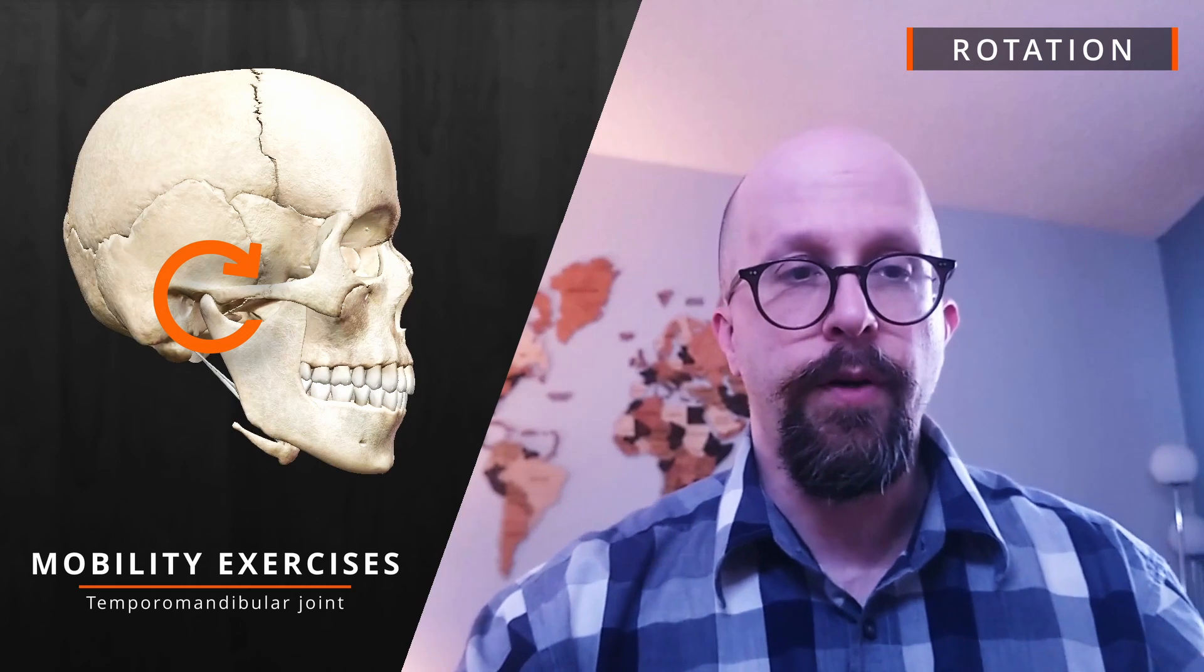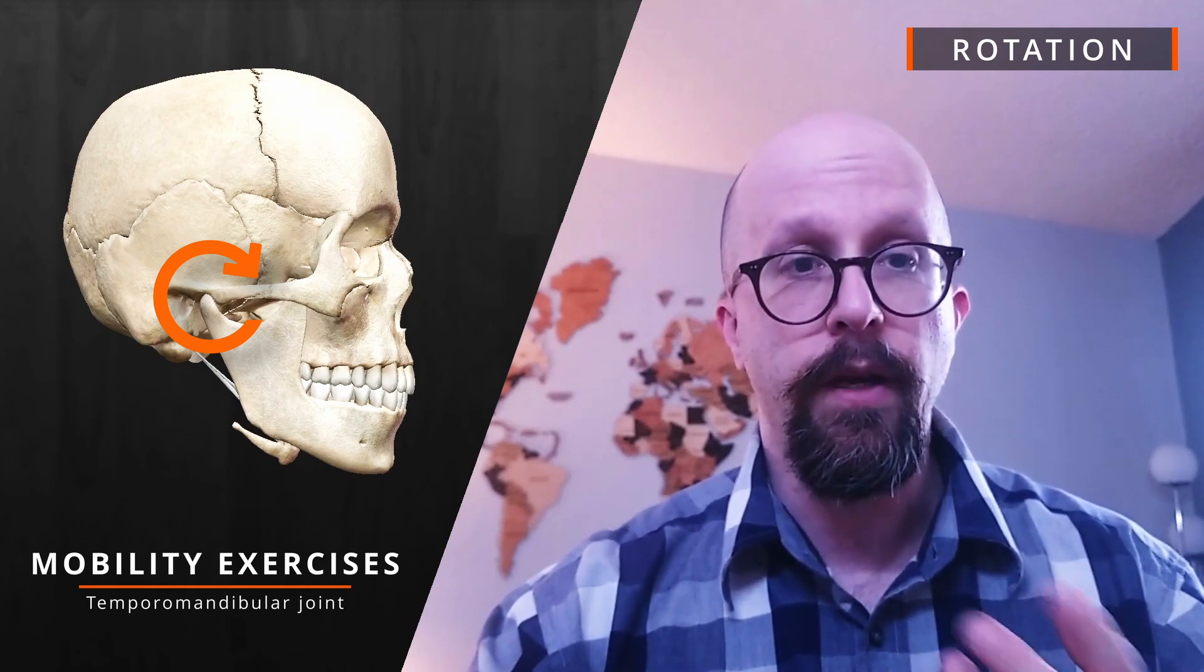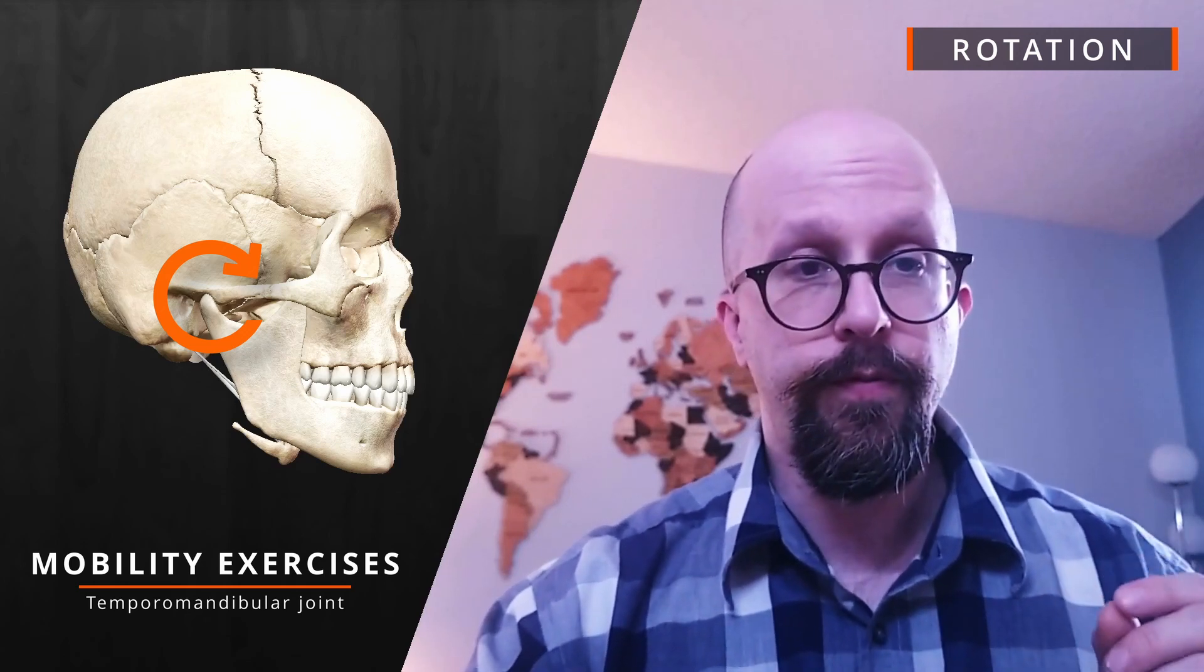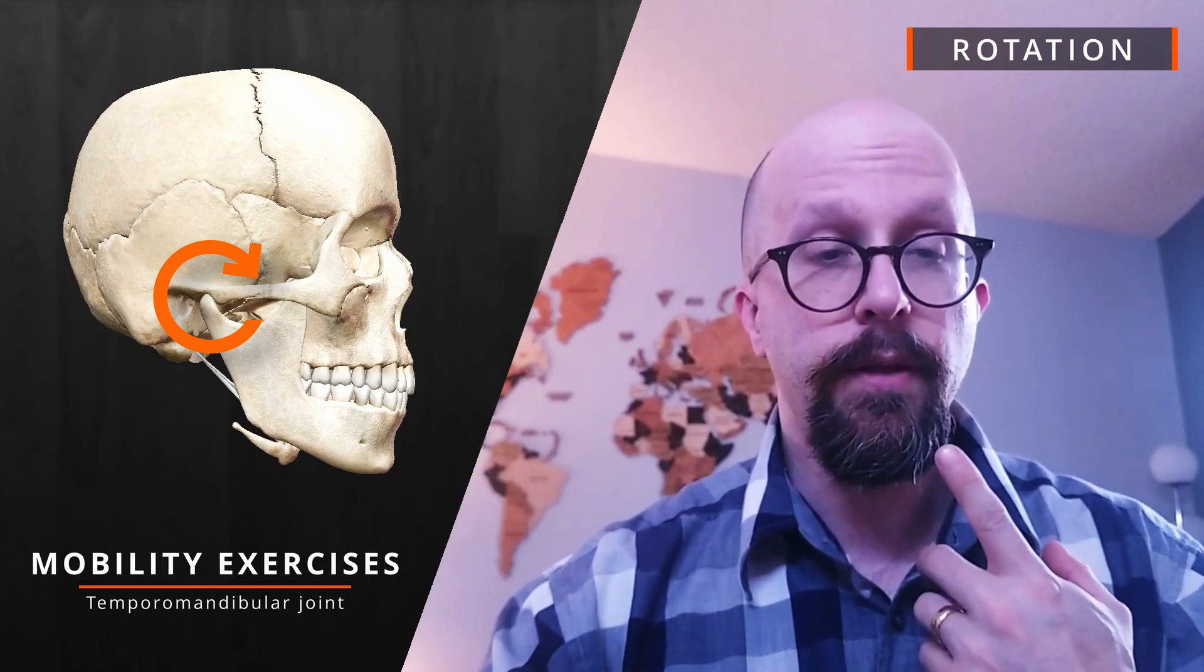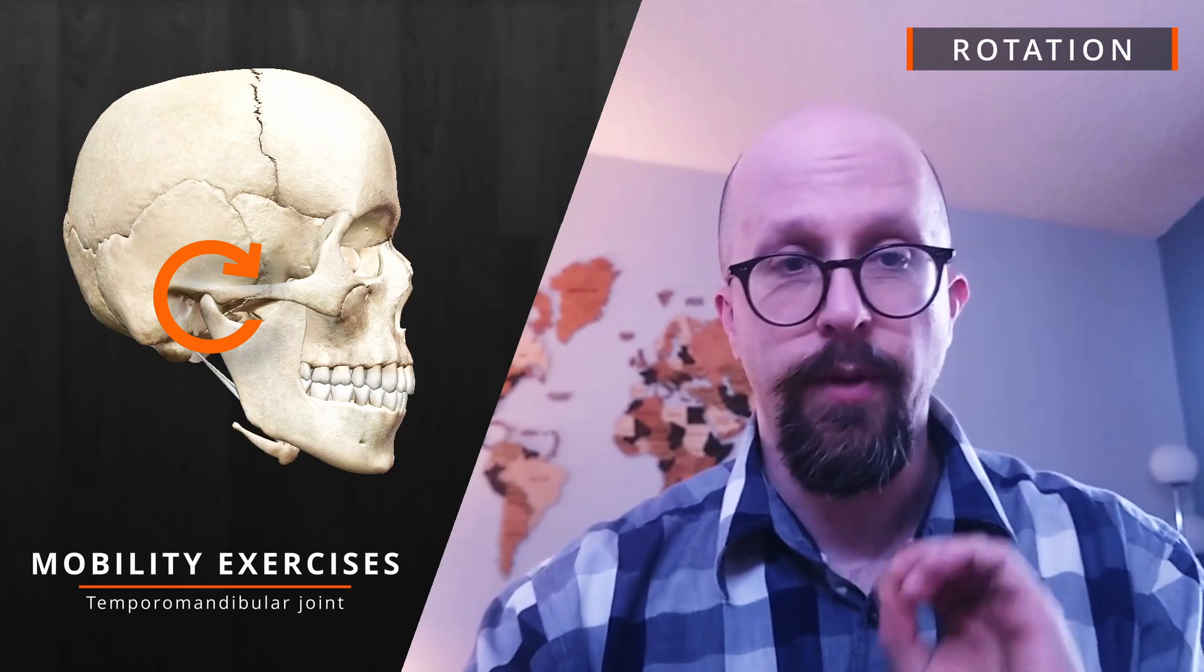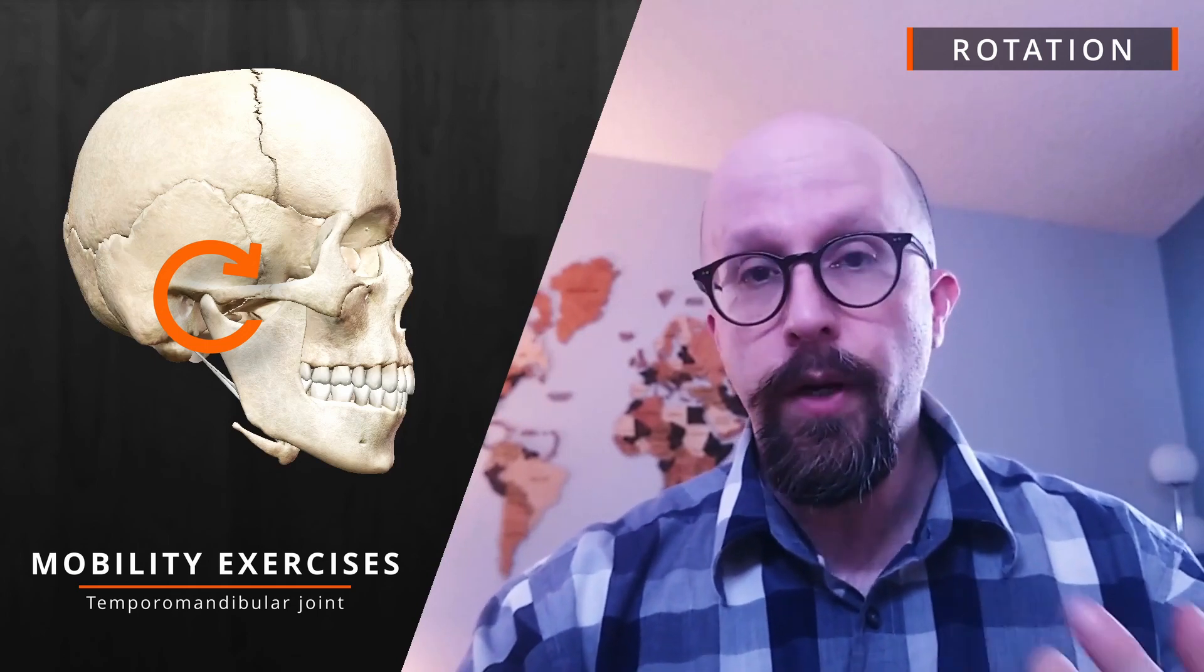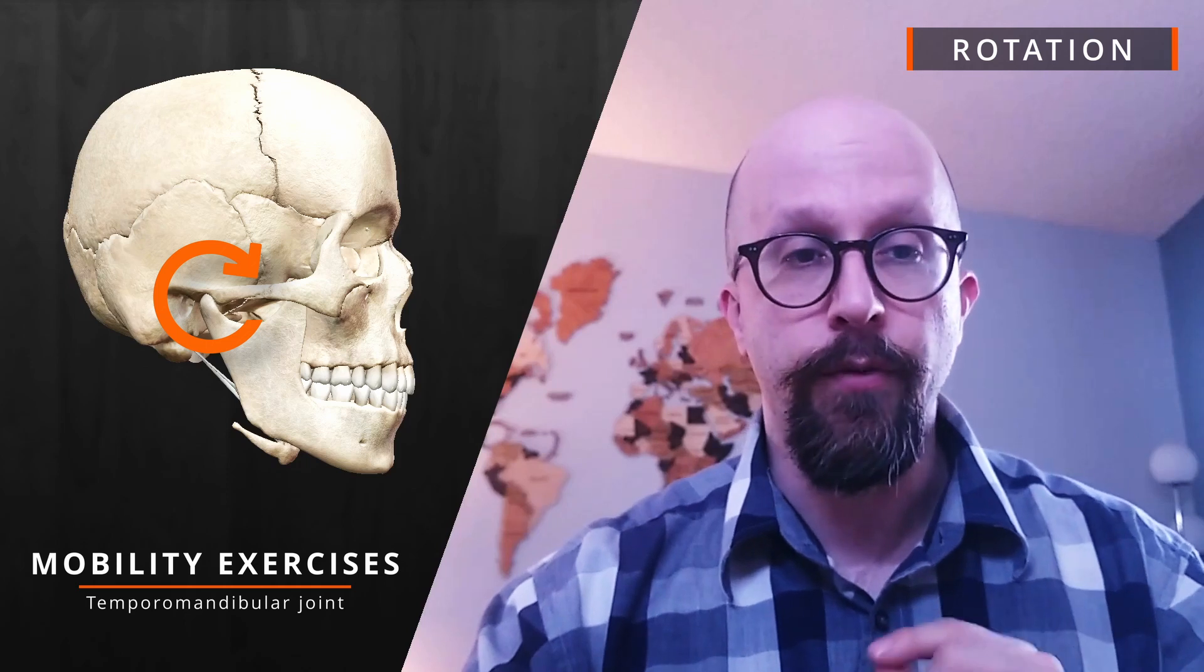The first movement we're going to teach is how to improve opening and closing the jaw. What you need to do is first put your jaw in a nice relaxed position. Place your tongue on the roof of your mouth. Say the word Emma. Wherever your mouth ends at that point, that's the relaxed position. From here, what you're going to do is open up your jaw as wide as you can without your tongue coming off the roof of your mouth.